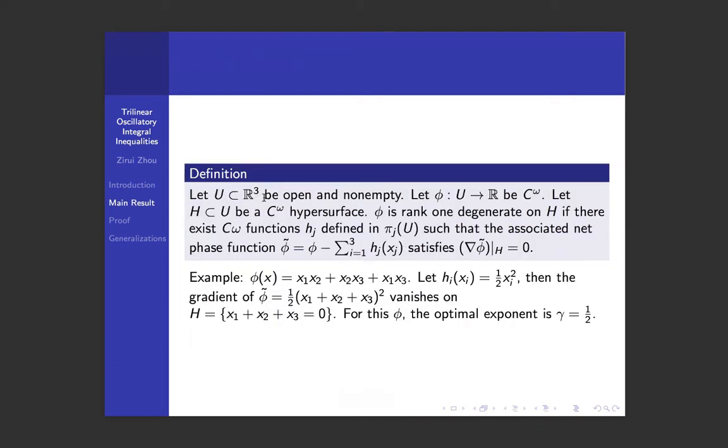Okay, to define the rank one non-degeneracy assumption, we say that a phase function is rank one degenerate on a hypersurface H, on a real analytic hypersurface H, if there exists H such that the full gradient of φ̃, which is φ minus summation over h_j(x_j), vanishes identically on the hypersurface H. To give a specific example, let φ(x) be x₁x₂ + x₂x₃ + x₁x₃. We see that for h_j equals ½x_j², this shows that φ violates the rank 1 non-degeneracy hypothesis.